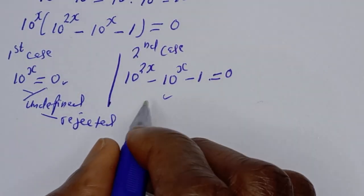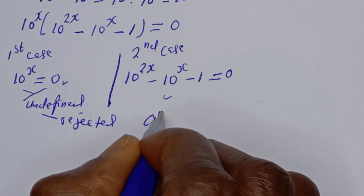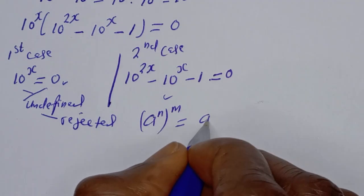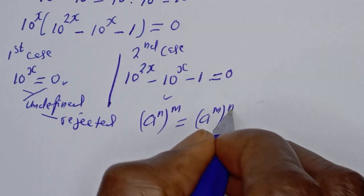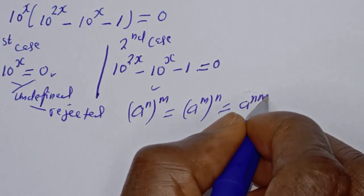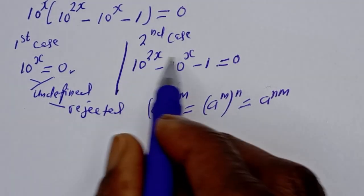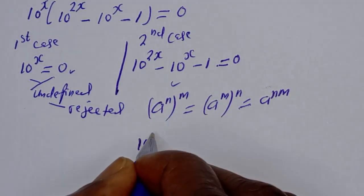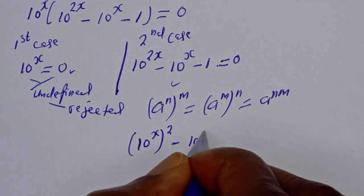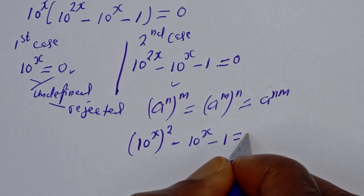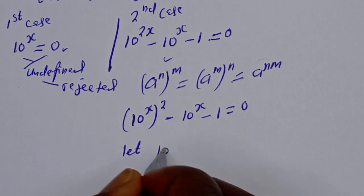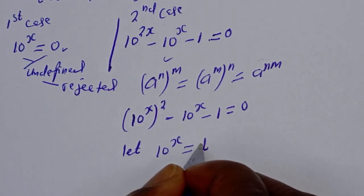So let's consider the second case. Note that if you have a raised to power n, to the power of m, this is equal to a raised to power m to the power of n, which is equal to a raised to power nm. Then the bracket can be written as 10 raised to power s squared, minus 10 raised to power s, minus 1 is equal to 0.